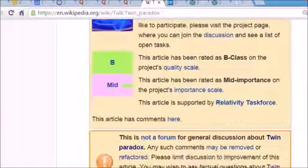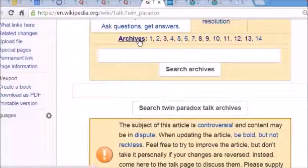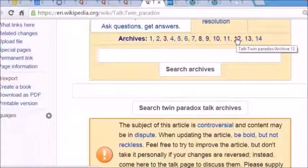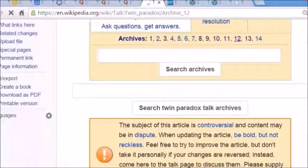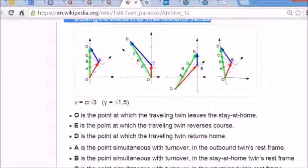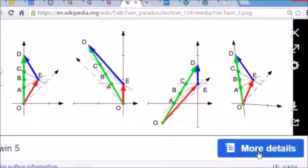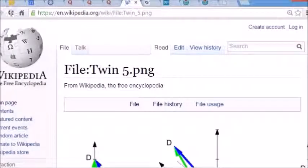I'm going to begin by going to talk archive number 12 and you'll find this note from W Woods saying nobody picked up on it but I proposed a diagram like this a few months ago showing the events in all three reference frames. The original diagram he proposed can be found by clicking here on the diagram, then on details, then on the file history and finally on the prior version of the file.